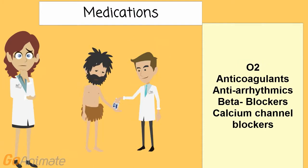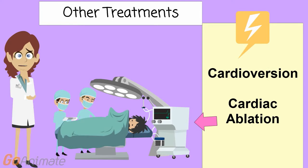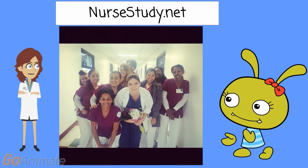Medications that are used include oxygen, anticoagulants, antiarrhythmics, beta blockers, and calcium channel blockers. Other treatments used to combat atrial fibrillation include cardioversion and cardiac ablation.